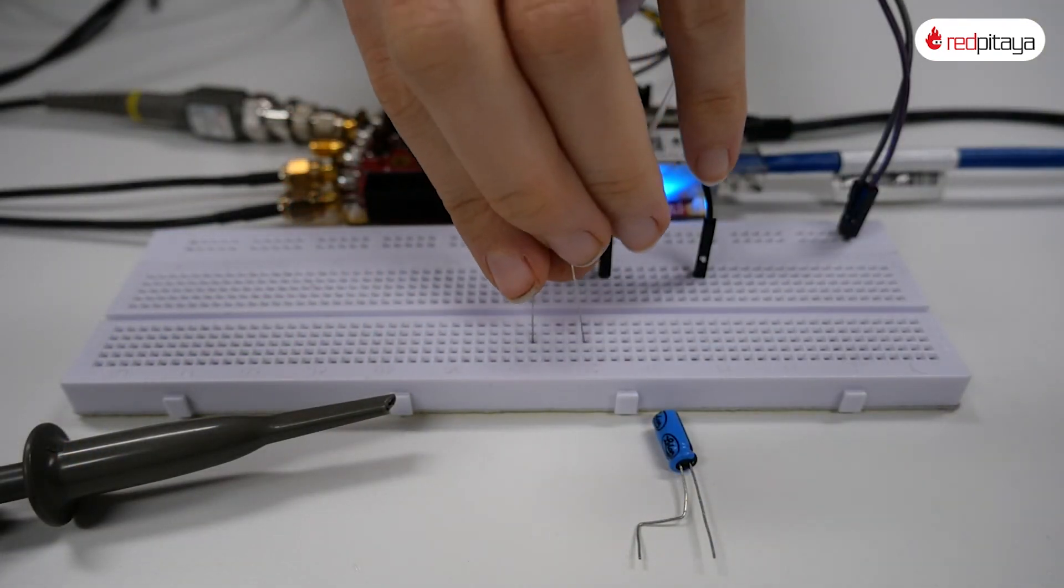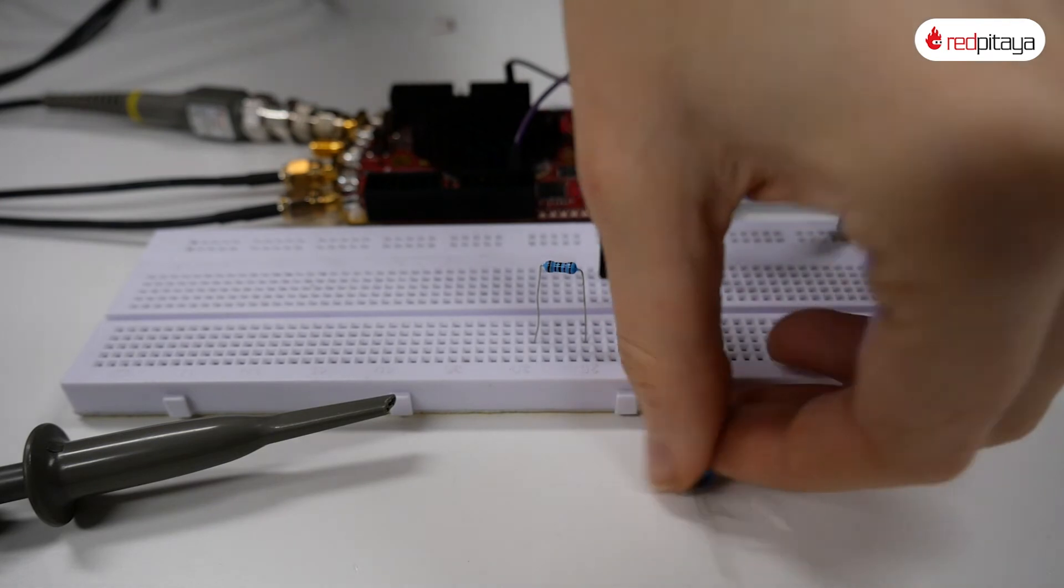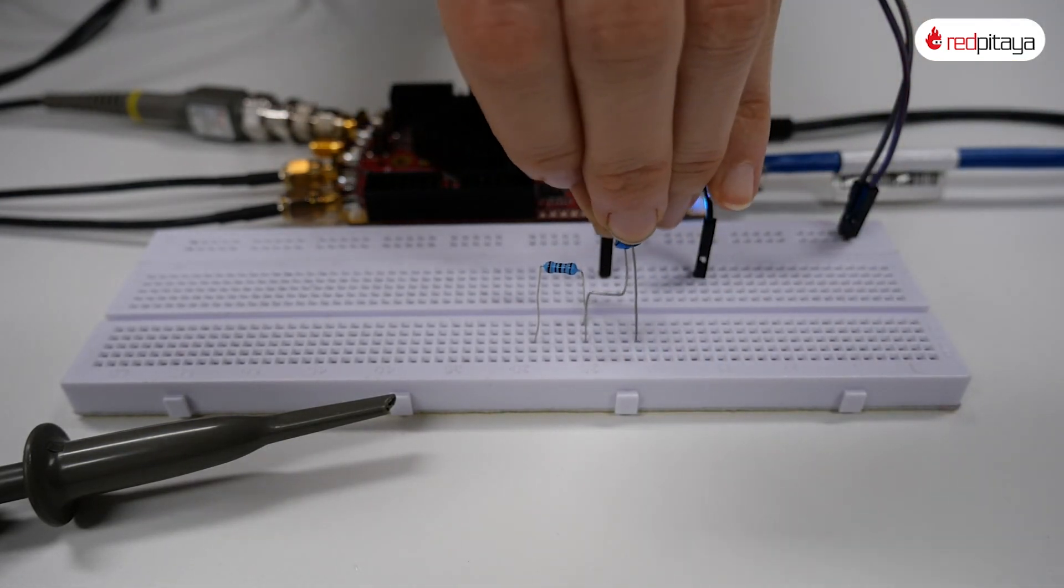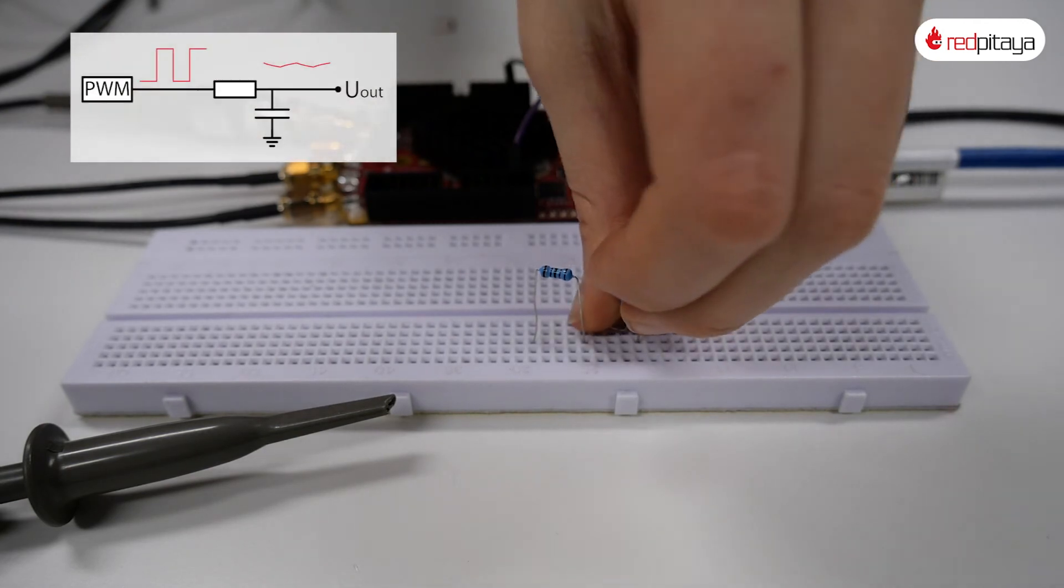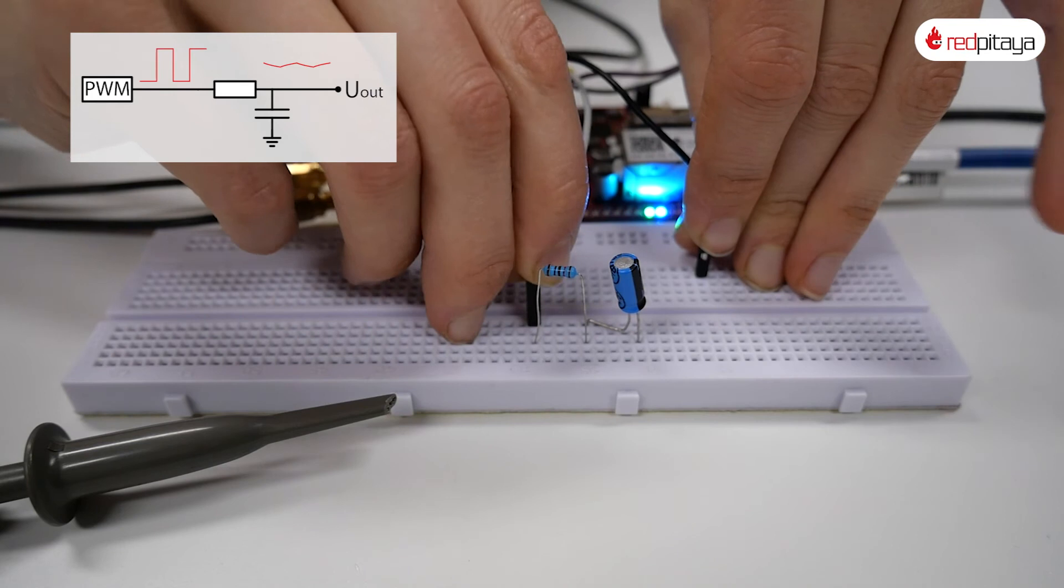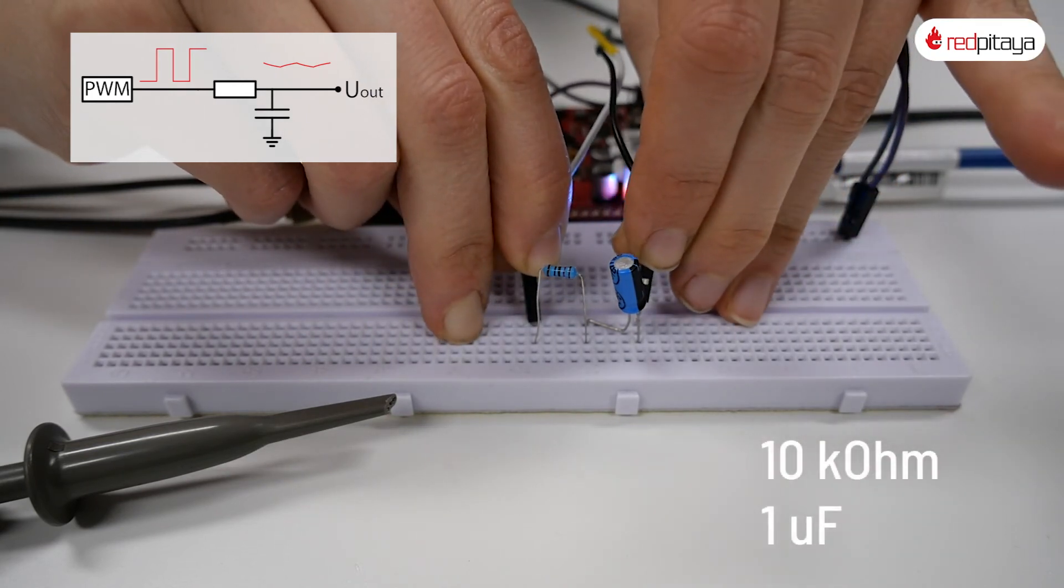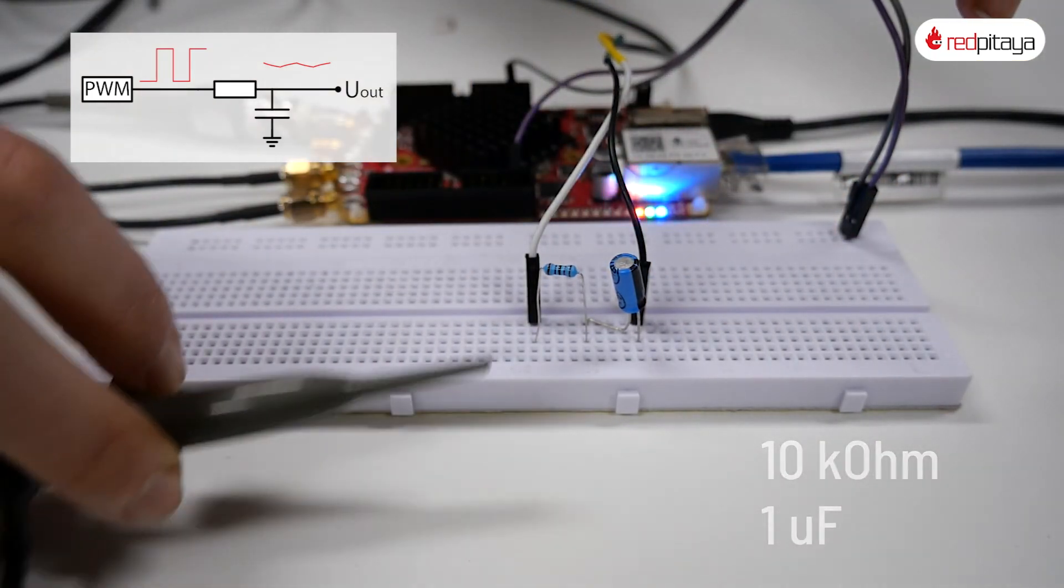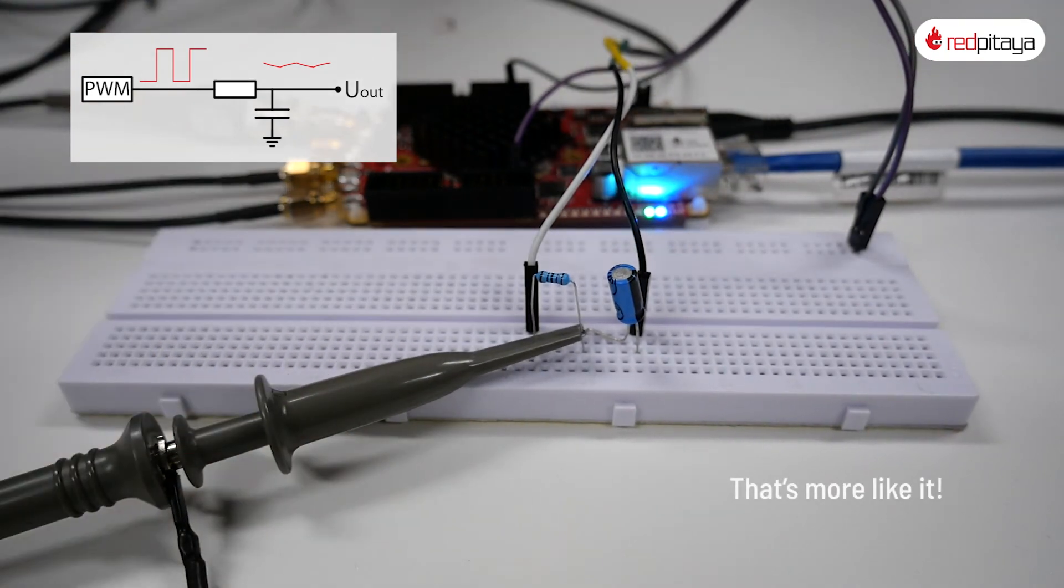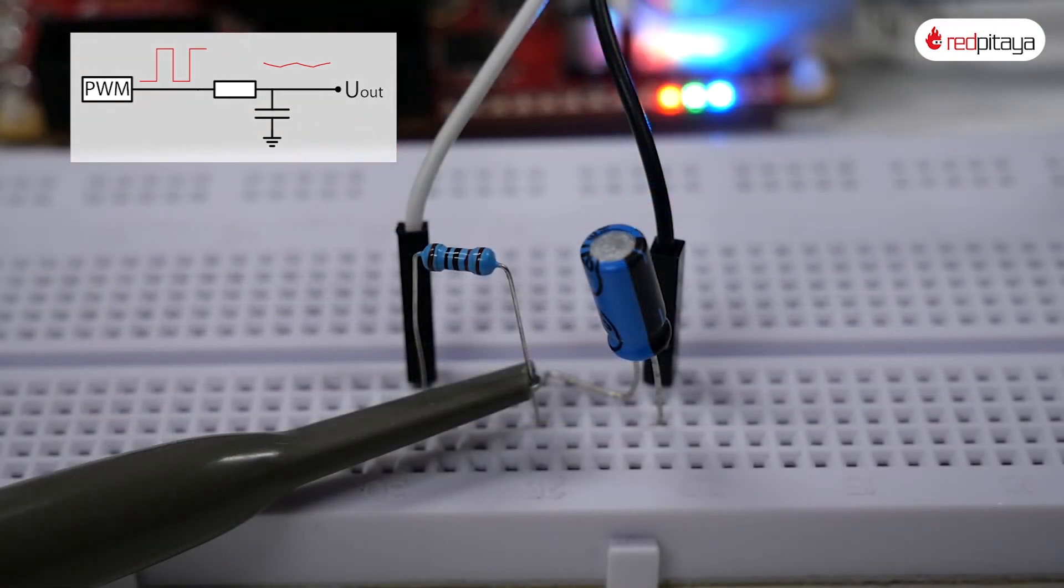We can convert PWM into what is essentially a DC signal. That is done simply by applying a strong low-pass filter to the PWM output. Let's use a 10k resistor and 1uF capacitor. PWM will be generated directly by Red Pitaya and we'll observe the output.